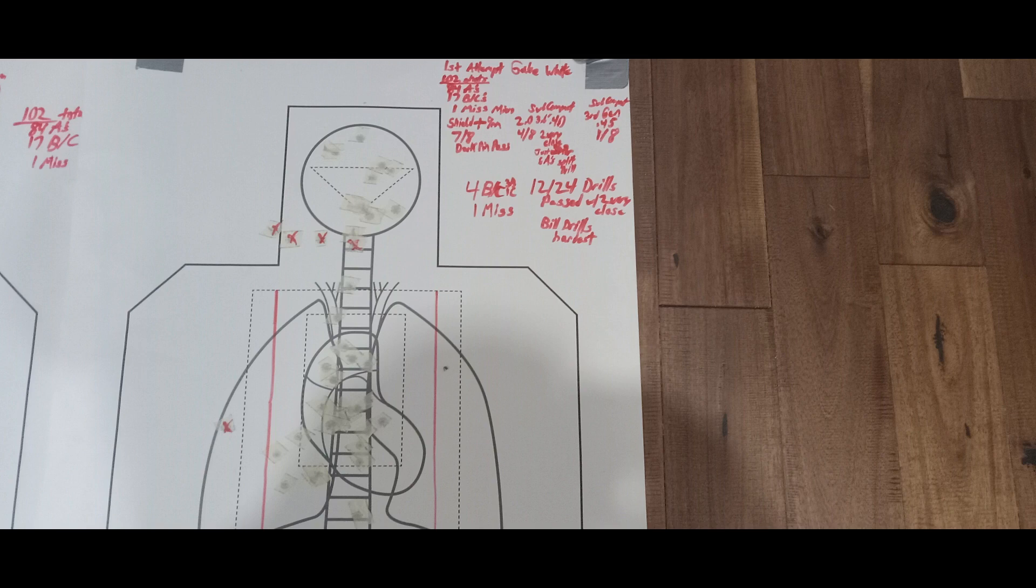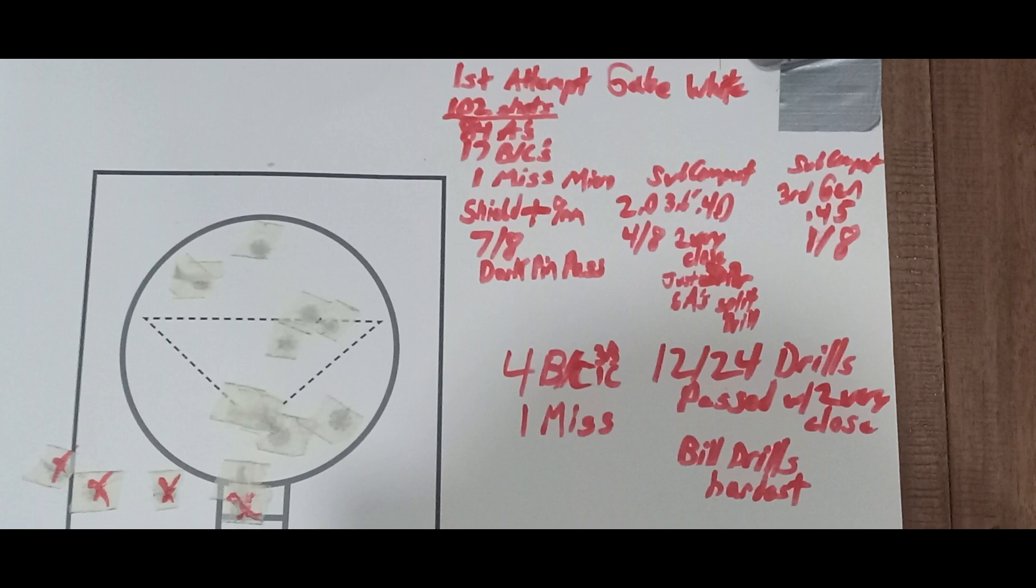With the 9mm I got seven out of eight. With the 40 subcompact I got four out of eight, with two being very close on the split bill drills. With the 45, only one out of eight, which has more to do with ergonomics than caliber.